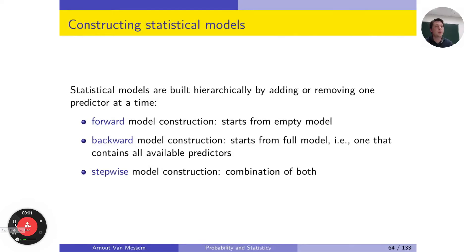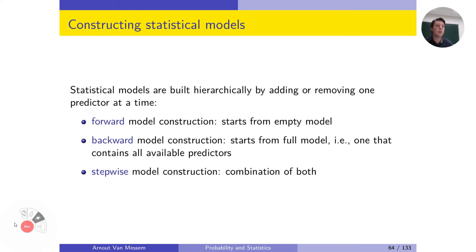There are several ways to construct a regression model. The first method is forward model construction, which starts from an empty model and adds predictors until we reach a final significant model. Backward model construction does the opposite: it starts from a full model containing all possible predictors and removes them until it gets to the final model.